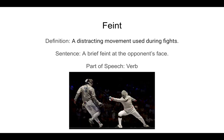The first word is faint. Faint means a distracting movement used during fights. Here's a sentence: a brief faint at the opponent's face. Part of speech is a verb. In the picture you can see somebody making a faint, or a distracting movement.